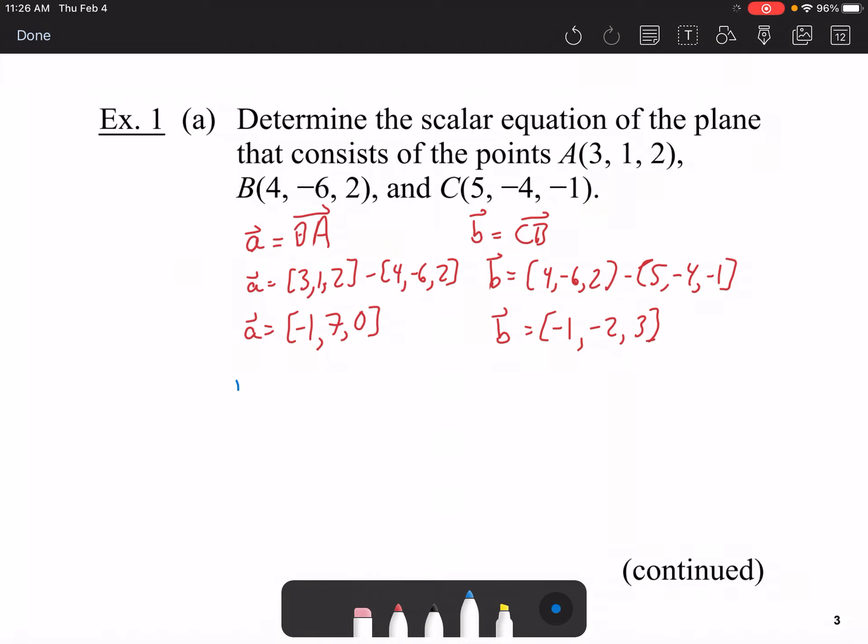Okay, so now that we've got that, we're going to find our normal vector. To find our normal vector, we're going to find the cross product of these two vectors. So, pause your video right at this moment and work out the cross product between these two vectors.